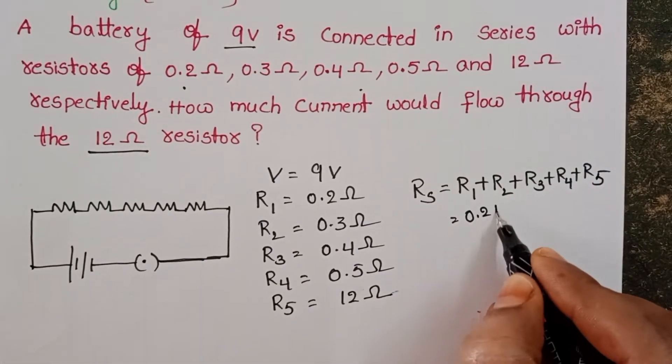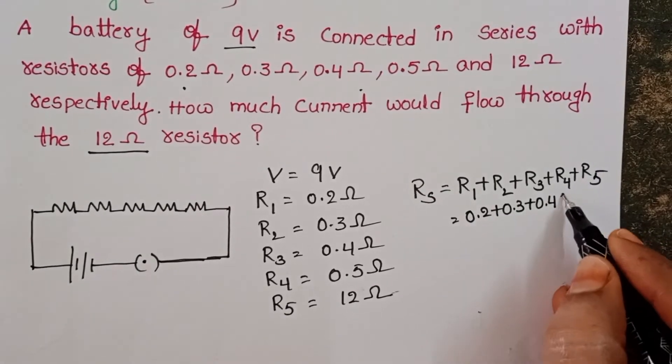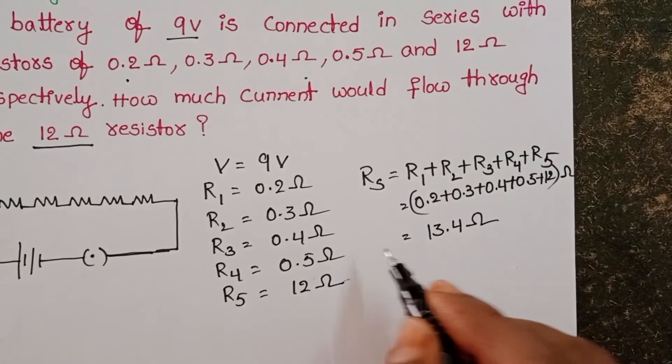So the equivalent resistance is 0.2 plus 0.3 plus 0.4 plus 0.5 plus 12, which equals 13.4 ohms.